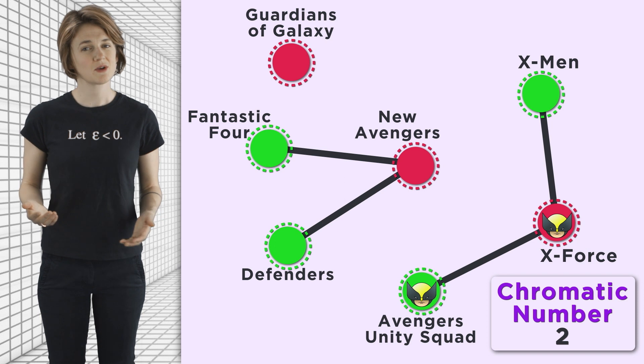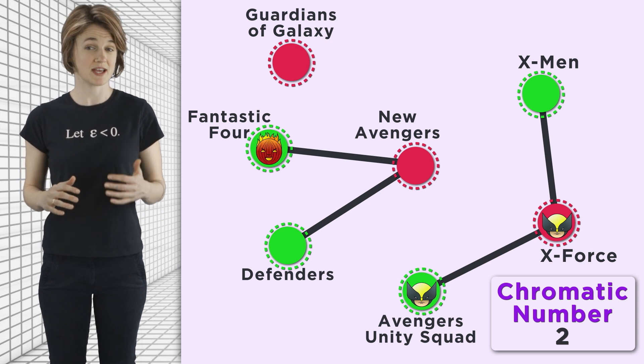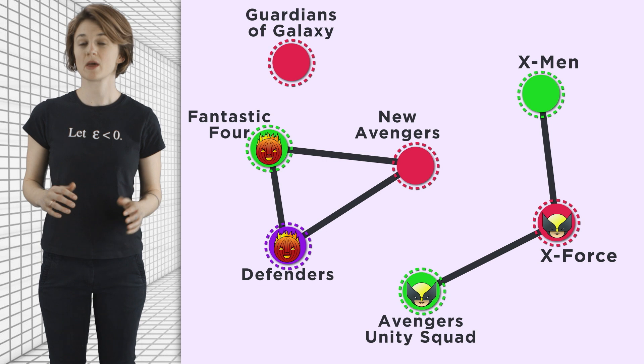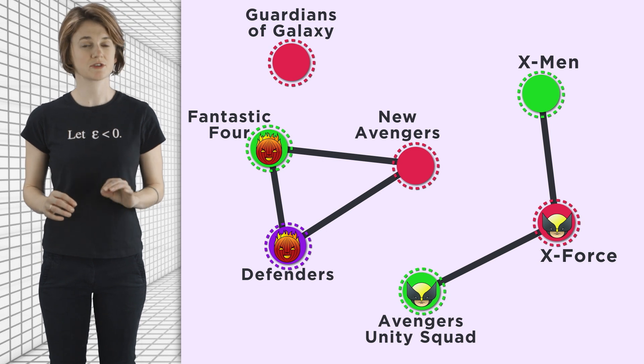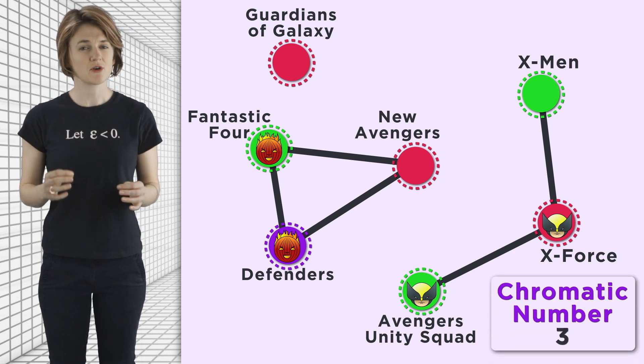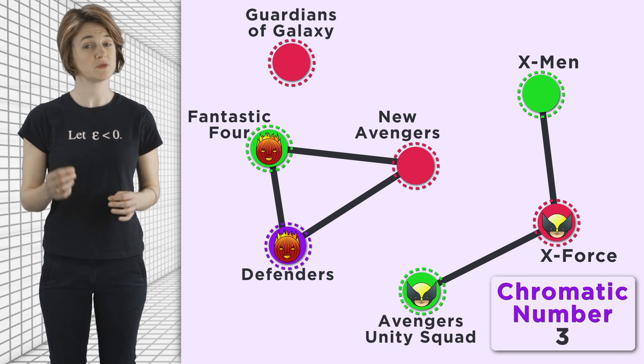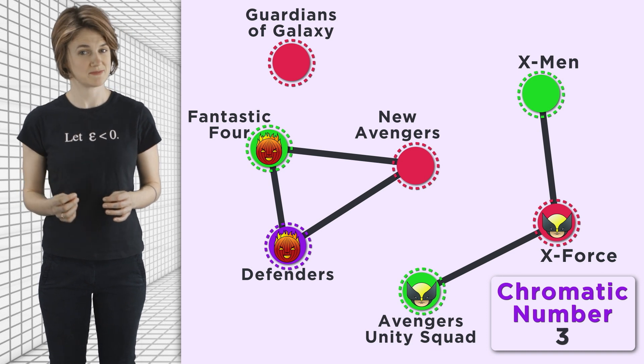Just for fun, here's what the graph would look like if Wolverine got too busy and dropped out of the New Avengers and the X-Men — it has chromatic number two. And while they're mixing up team members, Human Torch decides to join the Defenders. Now the chromatic number is three, even though each individual superhero is on no more than two teams. You can imagine that with a lot more superheroes and a lot more teams, this scheduling problem gets complicated very fast.